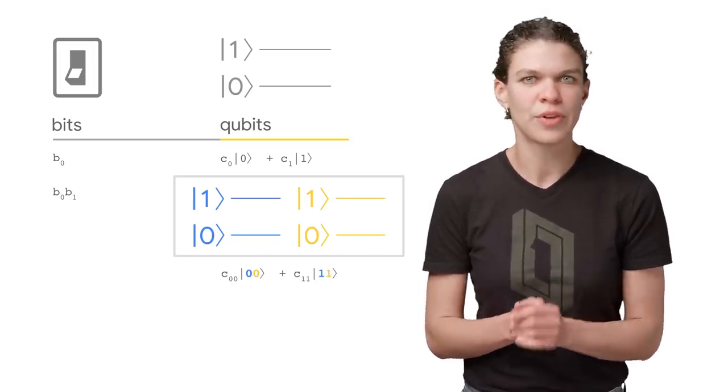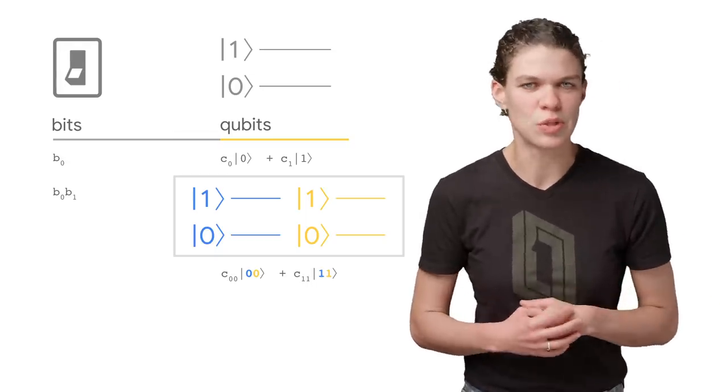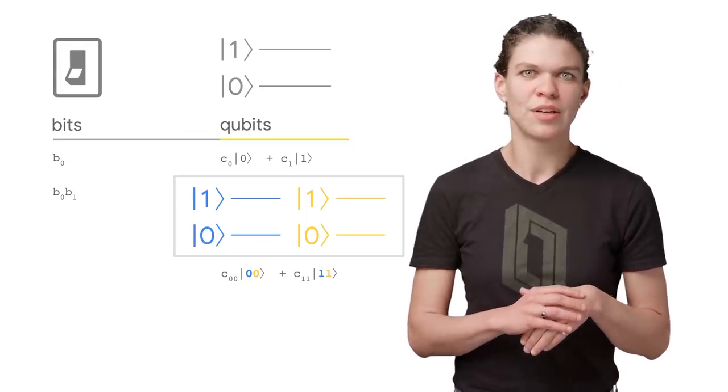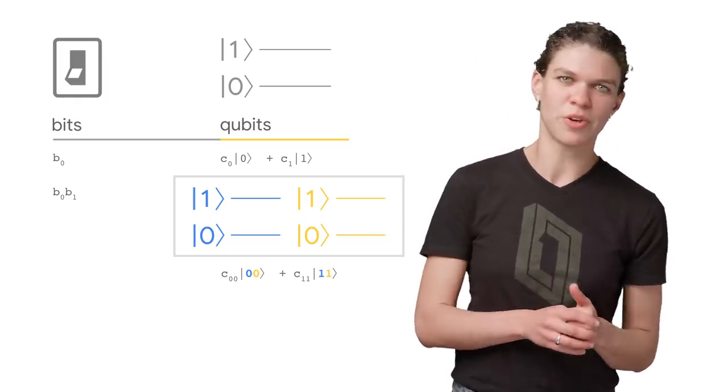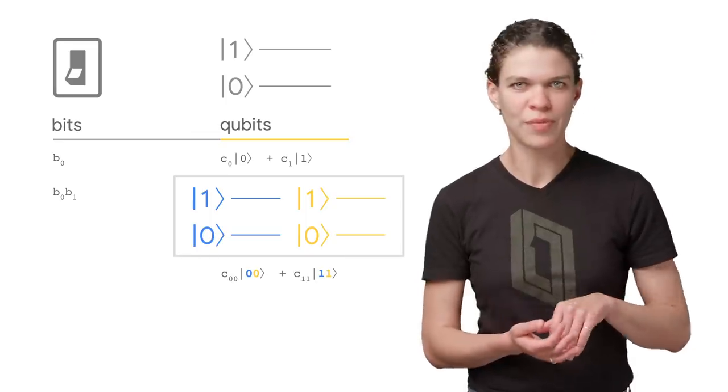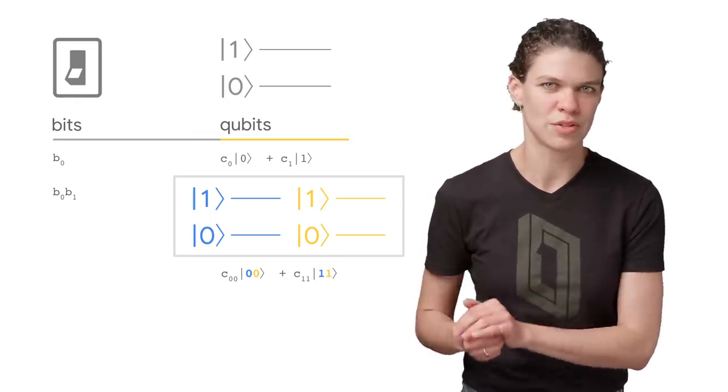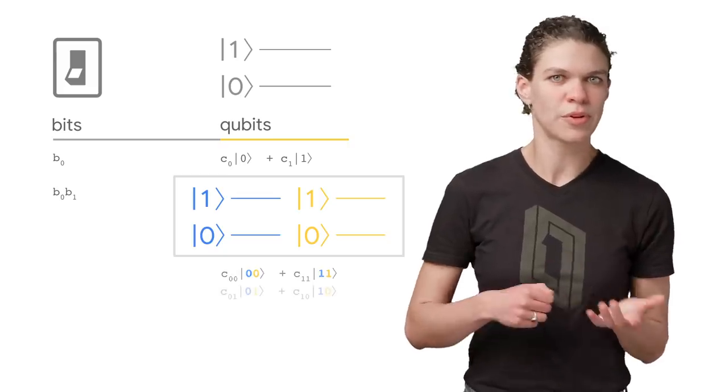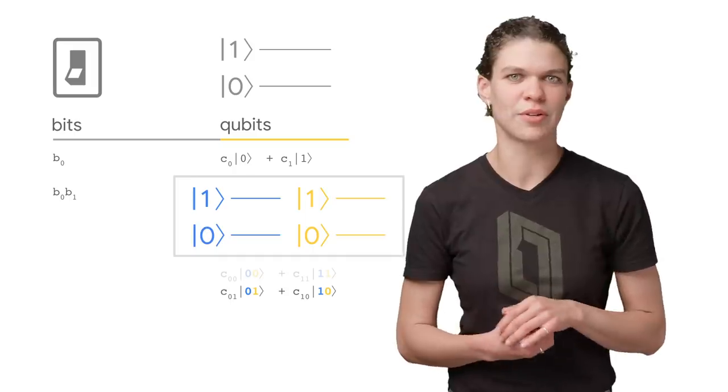For example, here's a state where a blue qubit and a yellow qubit are together in a superposition state. Here, they're correlated to each other. Before the measurement, it cannot be known whether the blue qubit will turn up zero or one, but a measurement of both qubits will certainly always give the same answer for each. Similarly, in this case, measuring the blue and yellow qubits will always give opposite outcomes.